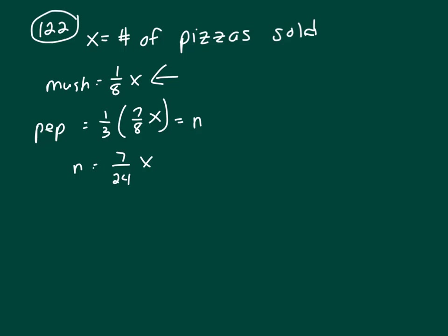So to find the number of mushroom pizzas, I need to know what X is. Let's multiply both sides by 24 to clear our fractions. That gives us 24N equals 7X. I'm solving for X because I want to plug in for X right there. That means 24/7 N equals X.